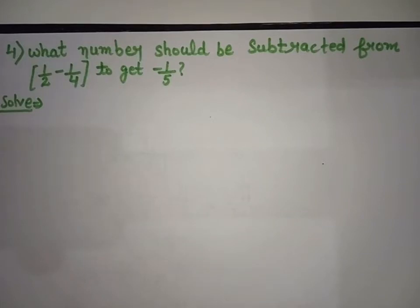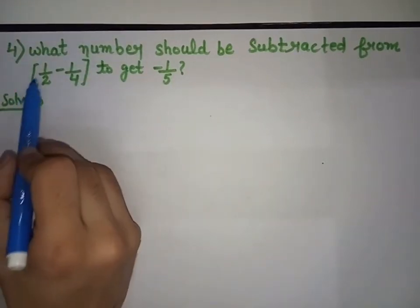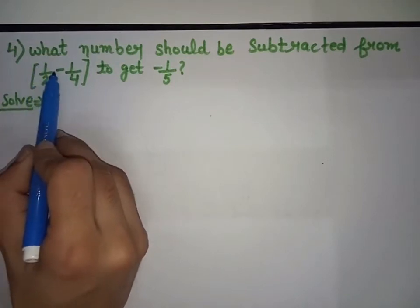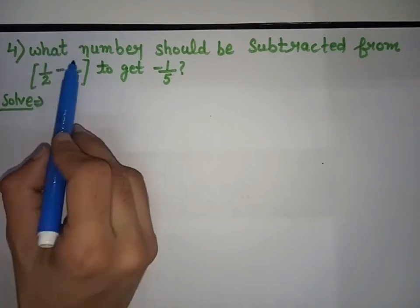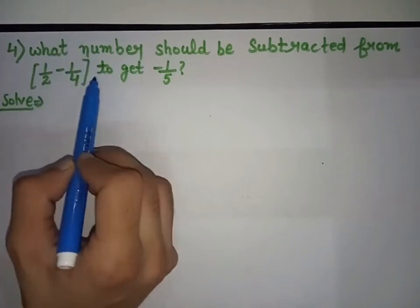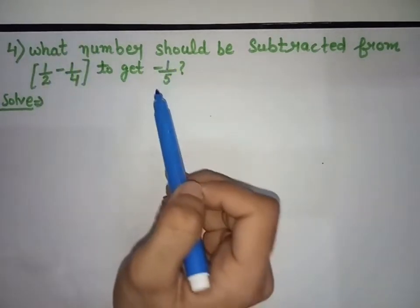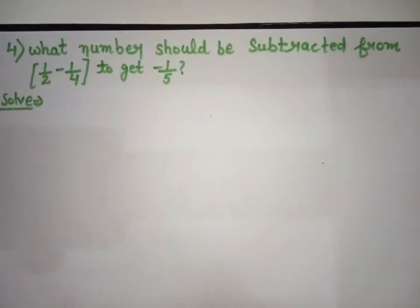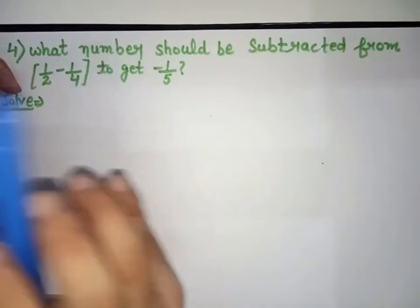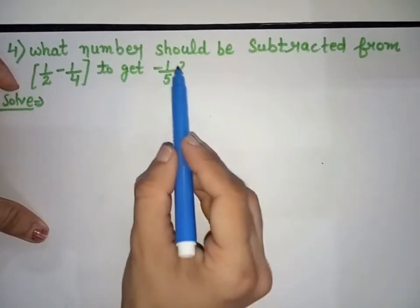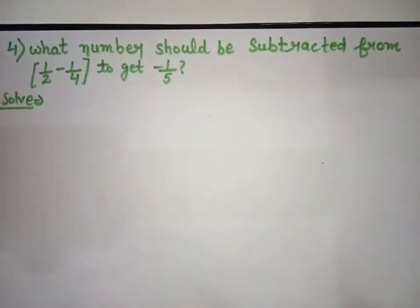Fourth sum: What number should be subtracted from bracket minus 1 over 2 minus 1 over 4 bracket close to get minus 1 over 5? We need a number to subtract from that expression to get minus 1 over 5. Let the subtracted number be x. We write the expression first, then minus x equals minus 1 over 5.